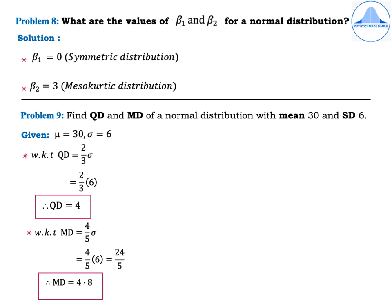Problem 8: What are the values of beta 1 and beta 2 for a normal distribution? As learnt under the properties of a normal distribution, it is a symmetric distribution so beta 1 equals 0, and it is a mesocurtic distribution so beta 2 equals 3.